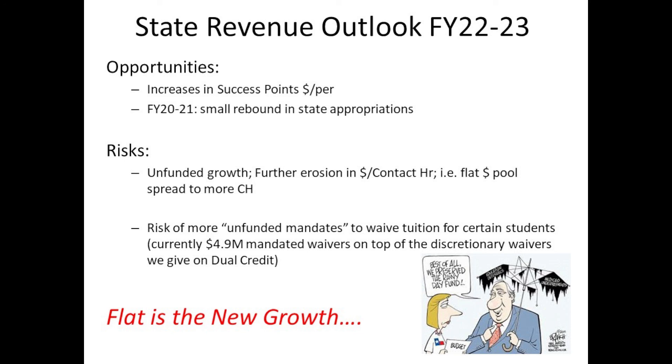We have to watch unfunded mandates — things that come through some bill not in the funding bill that requires us to waive tuition for certain programs, whether foster kids, firefighters, or whatever. Any of those programs that come through telling you you have no choice — you have to waive the tuition — that becomes an unfunded mandate. For us, it's over $5 million a year from all of those things. On top of that, we've elected as an institution to waive dual credit tuition — that is a board decision, and it is allowed in state law as one of the areas you can waive.